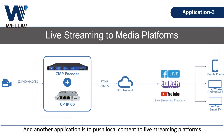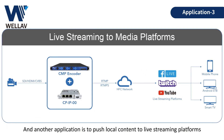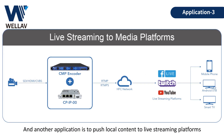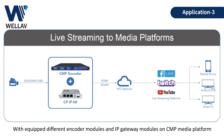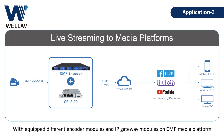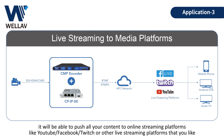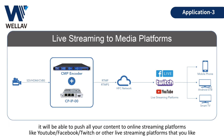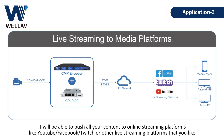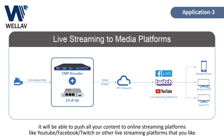Another application is to push local content to a live streaming platform. By equipping different encoder modules and IP gateway modules on the CMP media platform, it will be able to push all your content to an online streaming platform like YouTube, Facebook, Twitch, or other live streaming platforms that you like.